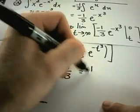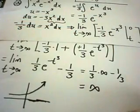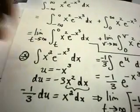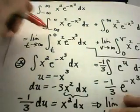So in this case, what we're getting is one third times infinity minus one third, which is just going to be plain old infinity. So it actually turns out that this first integral is going to be divergent.